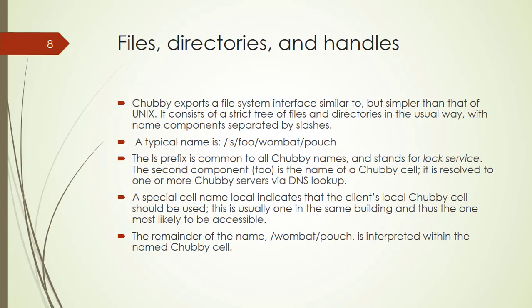The other topic is file directories and handles. Chubby exports a file system interface similar to, but simpler than, that of UNIX. It consists of a strict tree of files and directories in the usual way, with the names of components separated by slashes, like for example: /ls/foo/wombat/pouch. This is a typical name of directories and files.